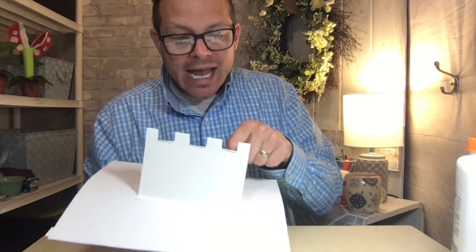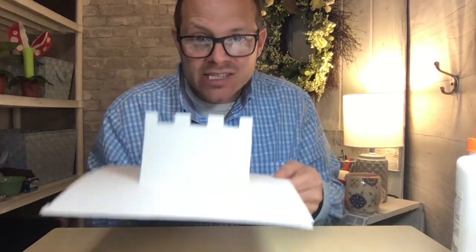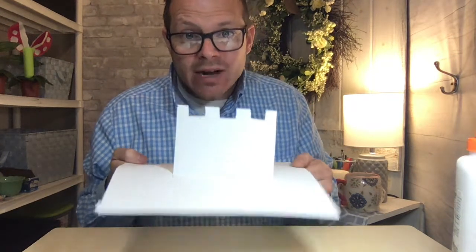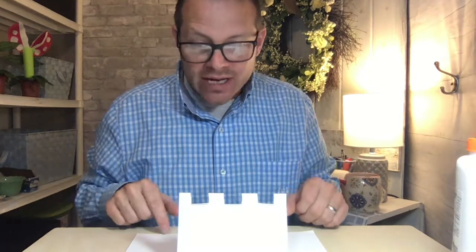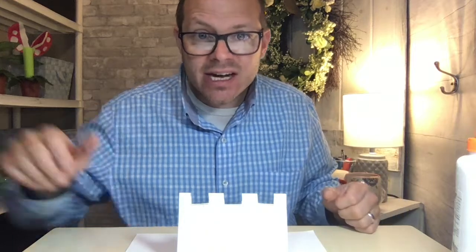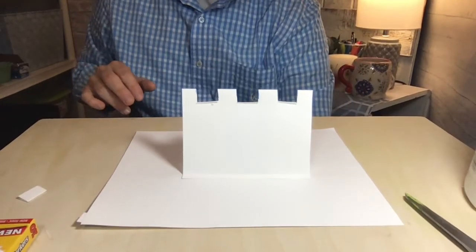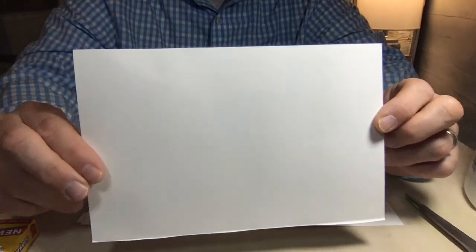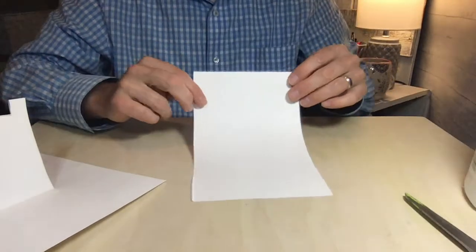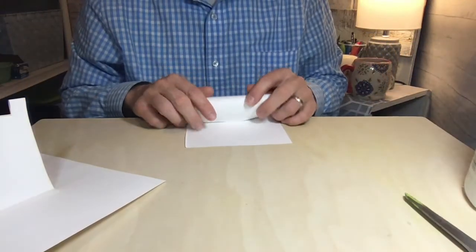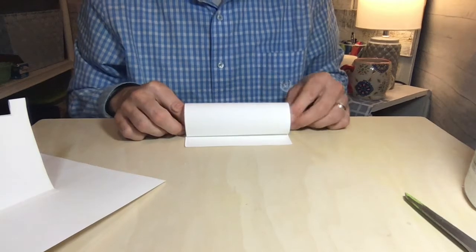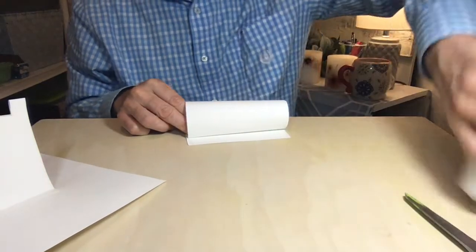Now we're ready to continue. So I want to create two towers on the side of my castle. Remember that other piece of paper that we cut off in the beginning? Now I'm going to use it and I'm going to create a tower. To create a tower, I'm going to turn my paper.